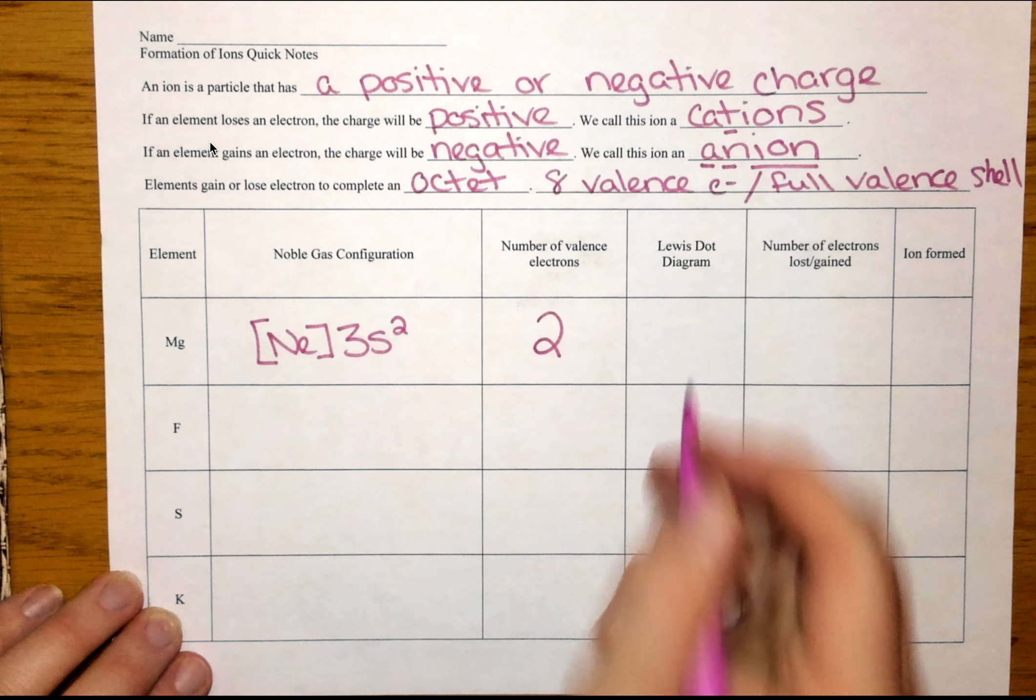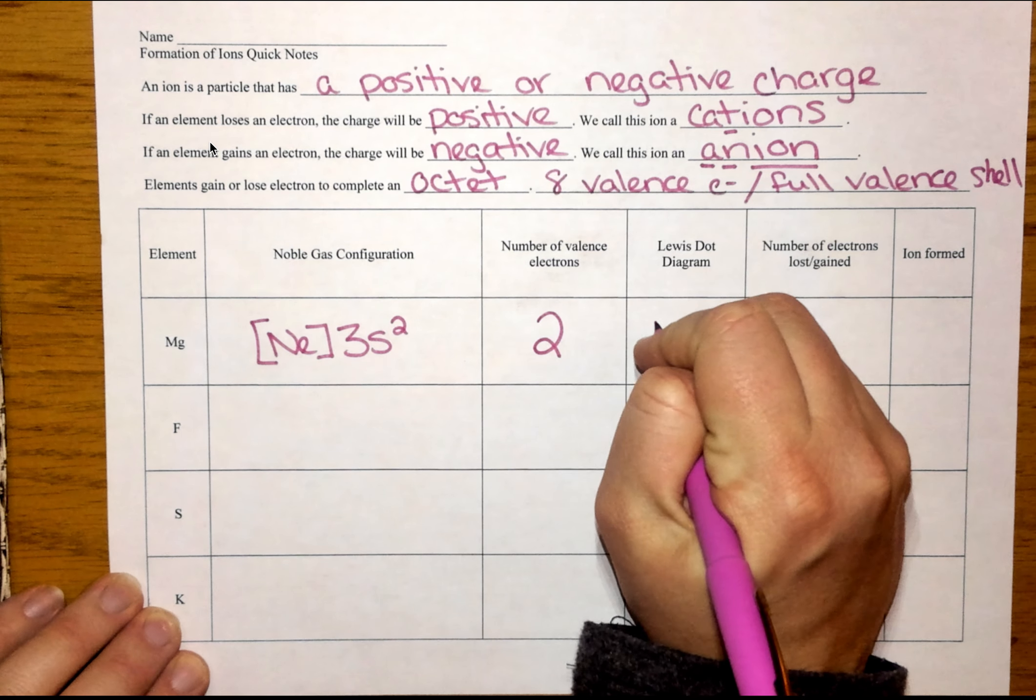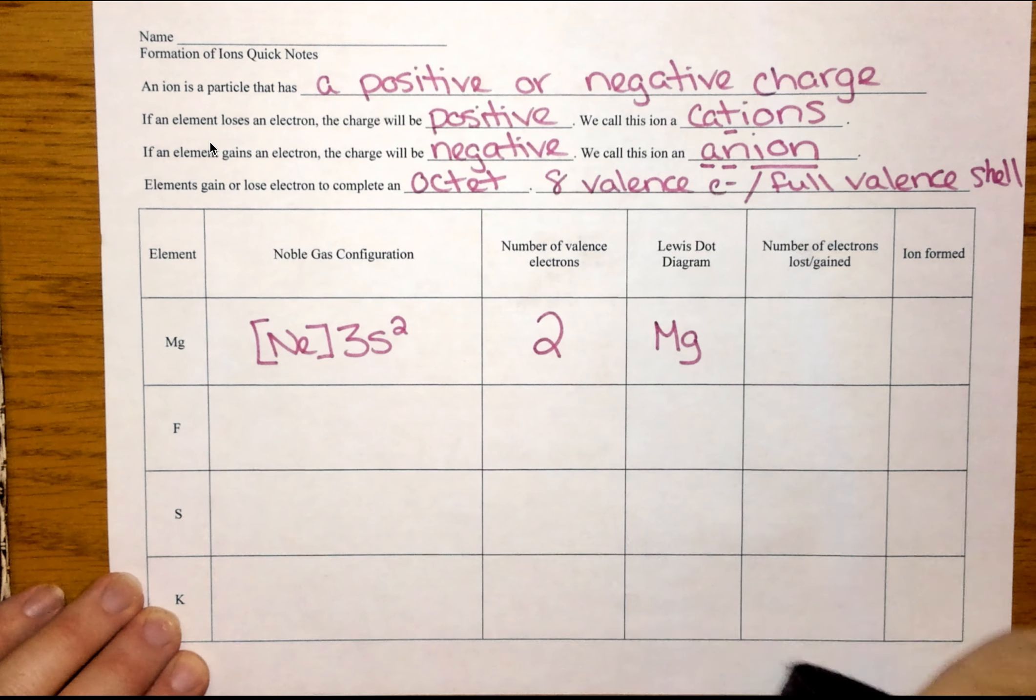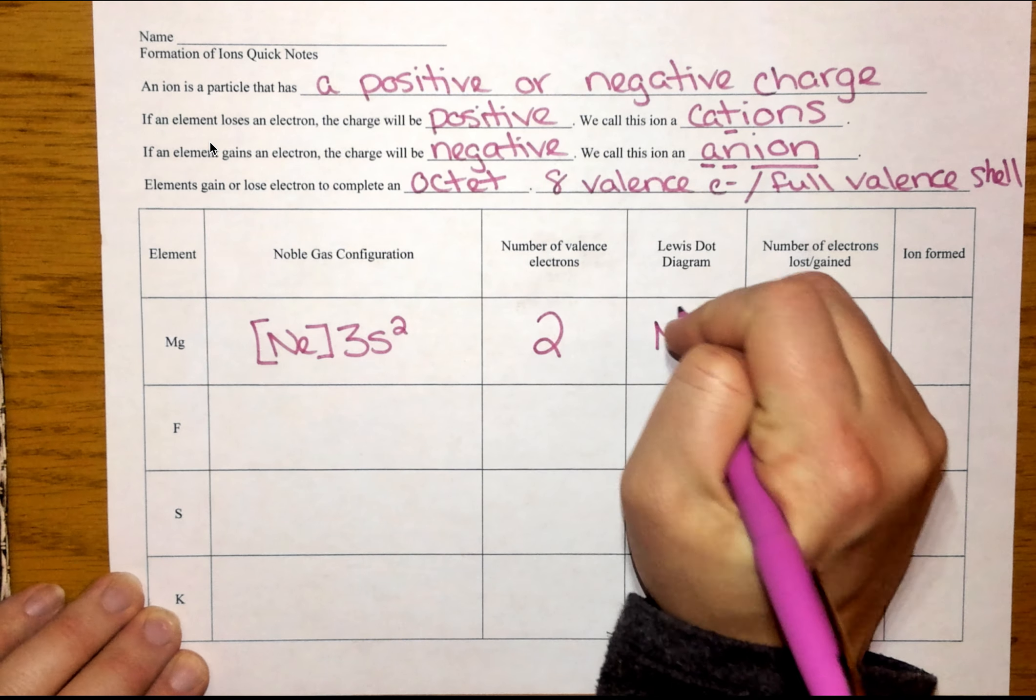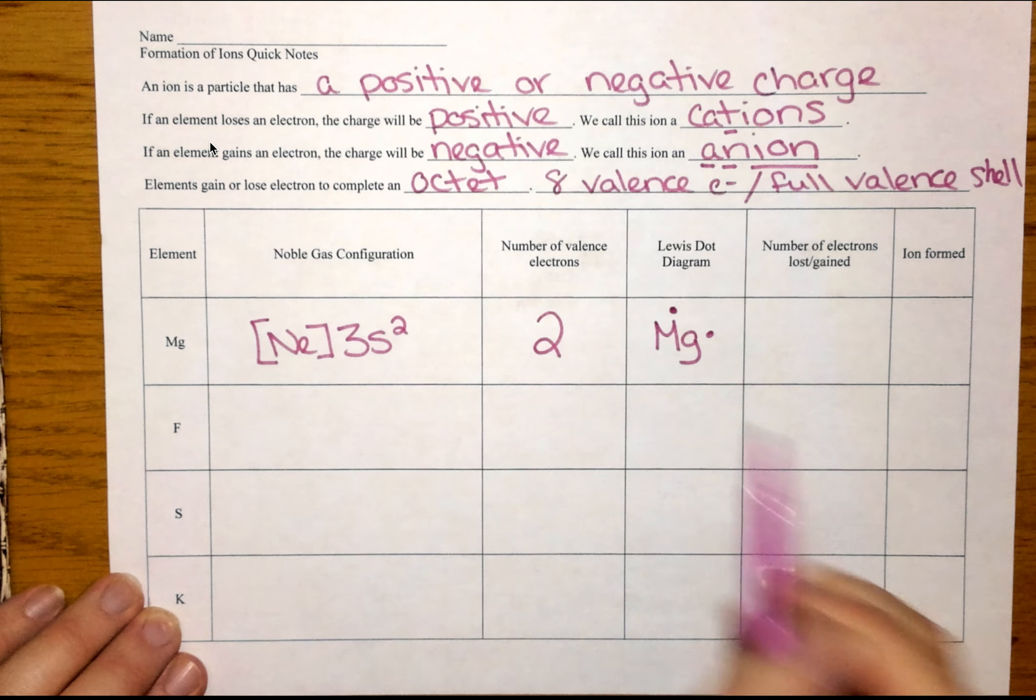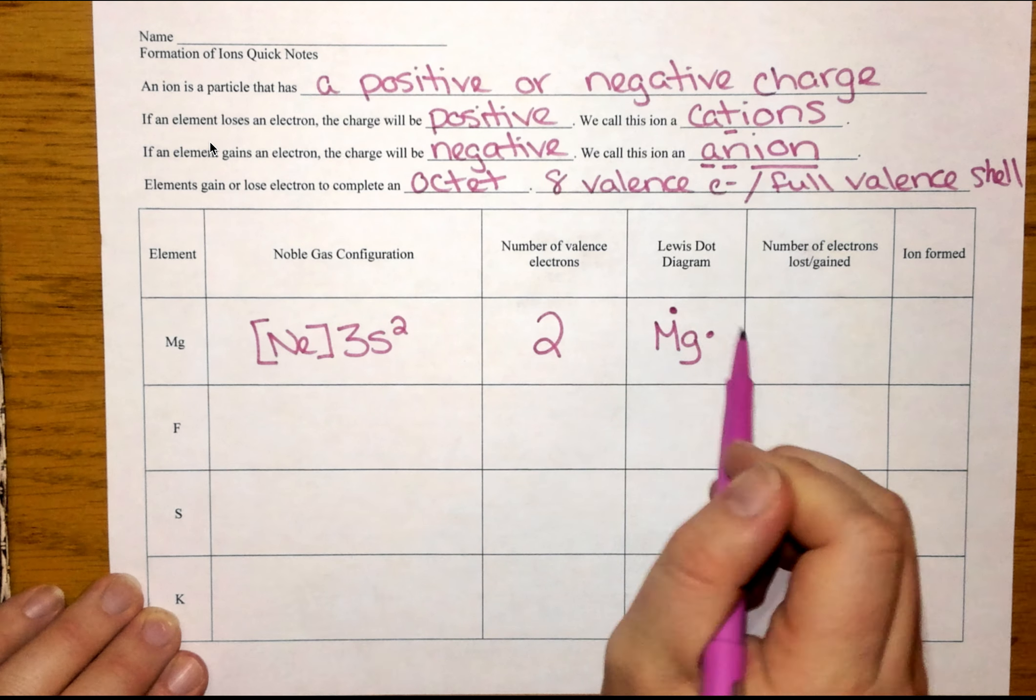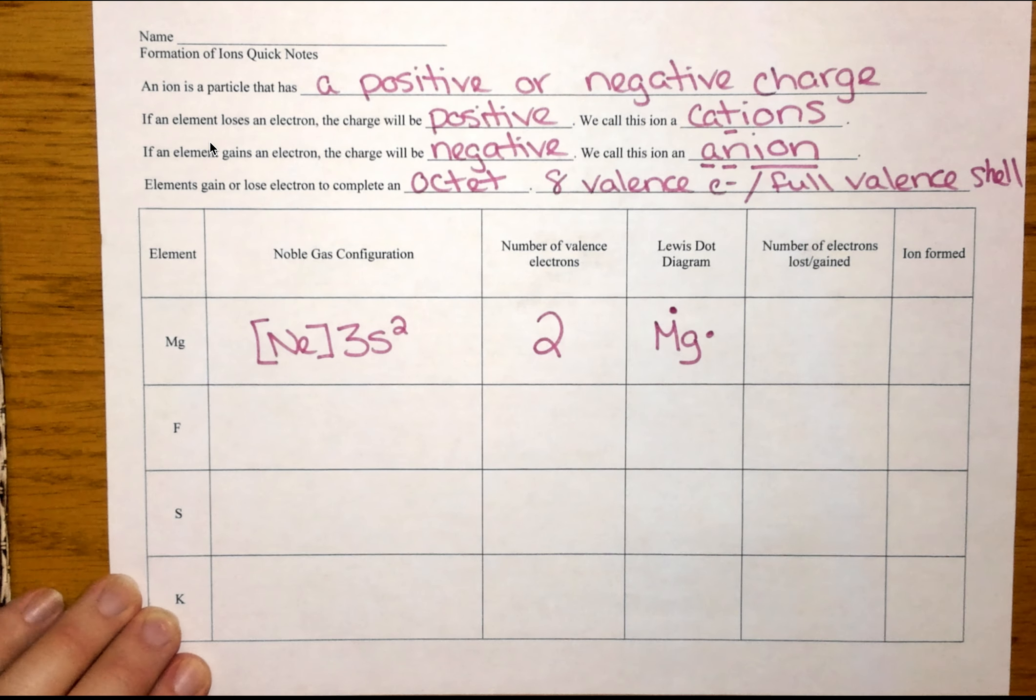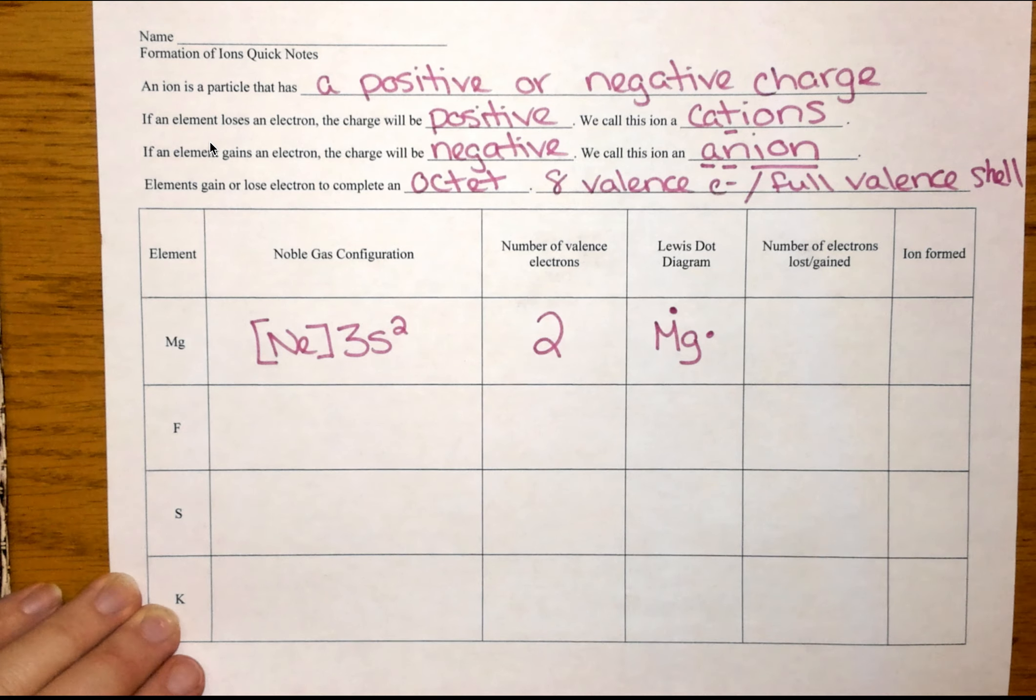Now, Lewis dot diagrams for single elements is super easy. All we're going to do is draw the element with two dots. Now, I don't care if you put them on the top and the bottom, the top and the side, the side and the side, whatever works for you. Just don't put them next to each other. And I'll explain why when we get to fluorine.